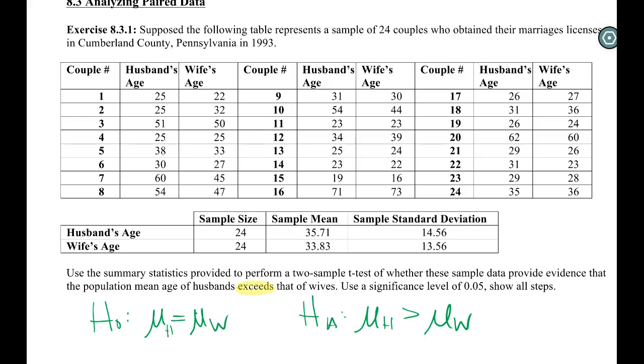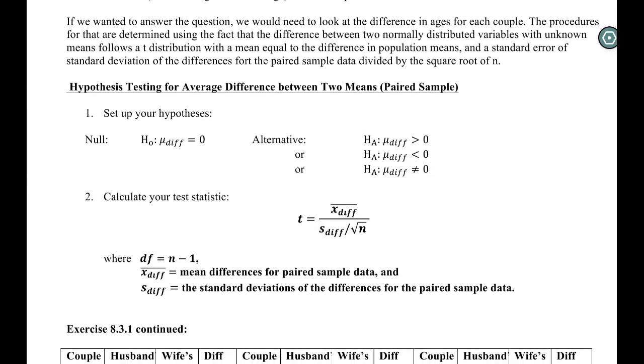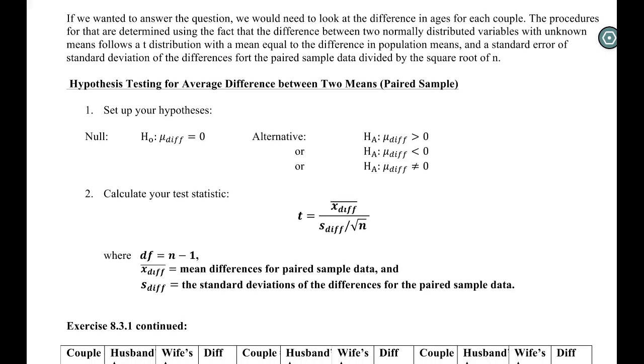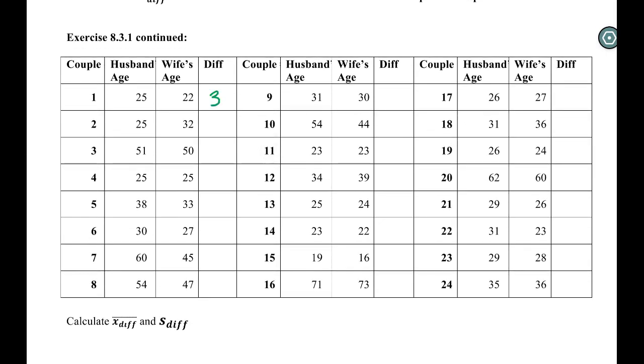So I'm actually not going to work through this incorrectly like I would normally do in a class. Instead, we're going to go ahead and do this correctly. So they are not independent. We've got to do a test for differences instead. So what we should be doing is we should be taking everybody, all these people, and then looking at the difference in their ages. So here, the husband was three years older than the wife. Here, the wife was seven years older than the husband. And the advantage of doing this is that now we can see how many years older a husband tends to be than his wife. And that's actually what we want to look at instead, the average difference in the ages, not the difference in the average of the ages.